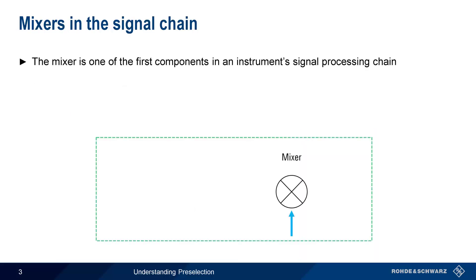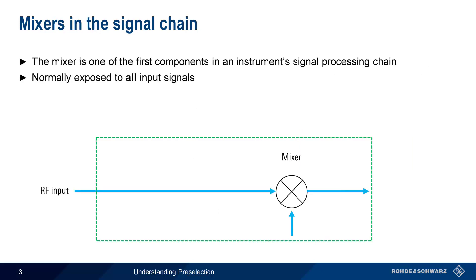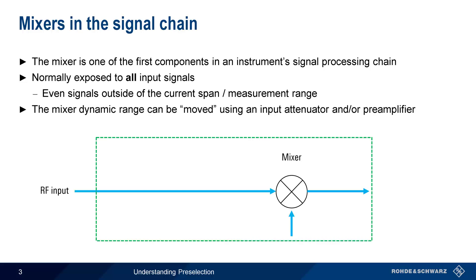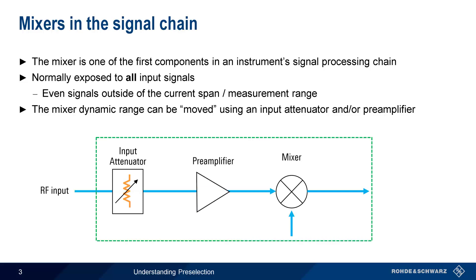Since the mixer is usually one of the first components in an instrument's signal processing chain, it's typically exposed to all signals present at the RF input. Even if we set our measurement range or span to only a limited frequency range, say 30 to 1,000 MHz, the mixer will still be exposed to RF power outside of this frequency range. In many instruments, dynamic range can be changed using an input attenuator and/or a preamplifier to raise or lower the input signal level. So why are we so concerned about protecting the mixer? There are really two main reasons: compression and spurious mixing products.